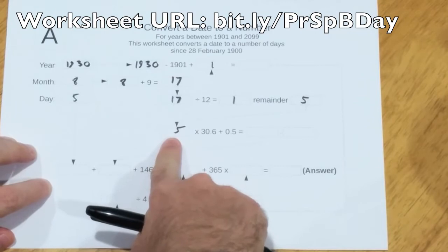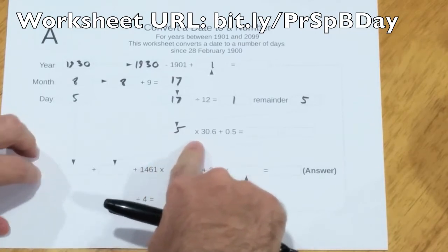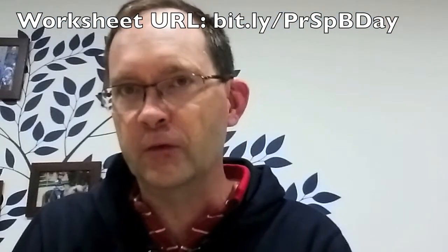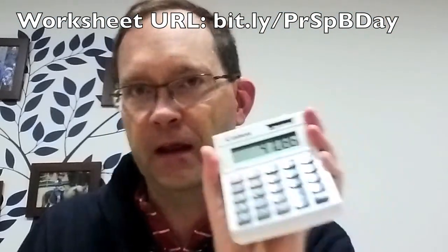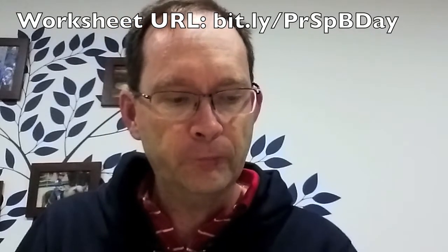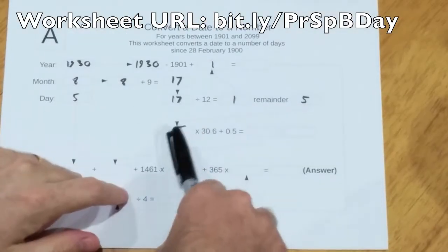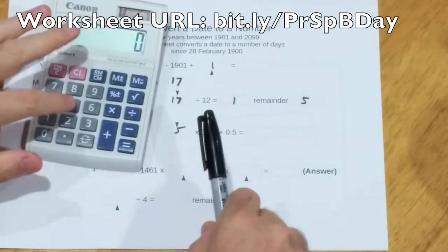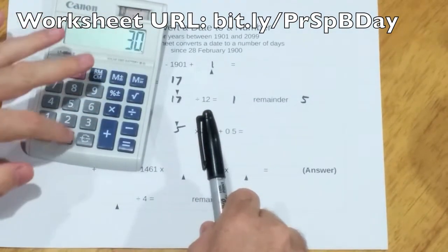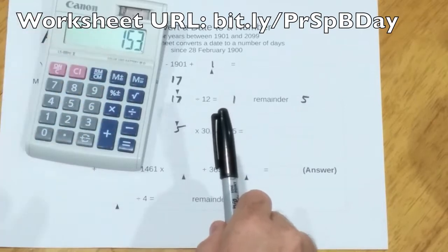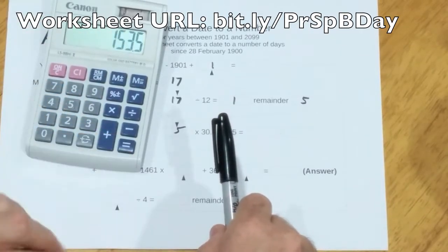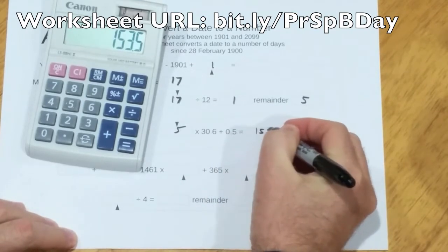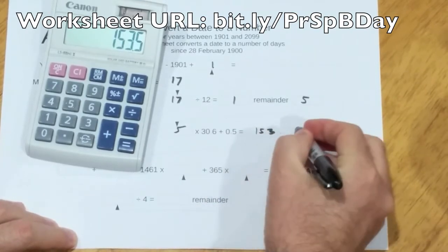However, you actually need a calculator for some of them, unless you're really good at multiplying with decimals. I'd suggest you are going to need a calculator. So let's work this out. 5 times 30.6 plus a half is 153.5.